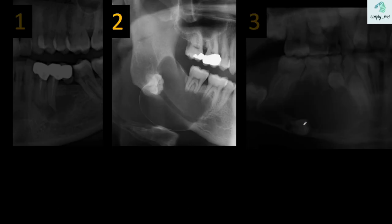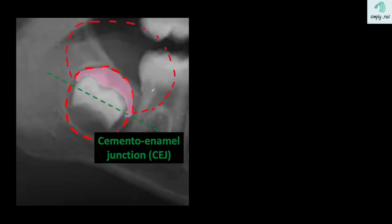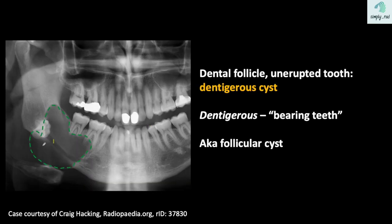Moving on to our next lesion — it clearly is a tooth-bearing lucent lesion, hence the name dentigerous cyst. Why are dentigerous cysts associated with non-erupted teeth? We see here a non-erupted tooth. To erupt, cells of the dental follicle must be able to migrate towards the occlusion plane. This pattern of the cyst base on the cementoenamel junction is characteristic of the dentigerous cyst. Going back to our sample case, the cyst wall converges at the cementoenamel junction, drawn in green. Next time we hear dentigerous, think of a lucent lesion which bears a tooth.